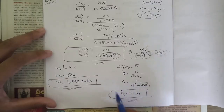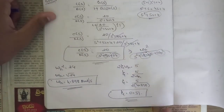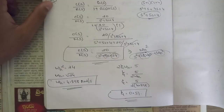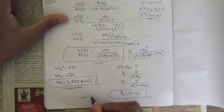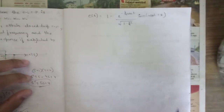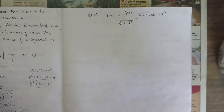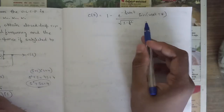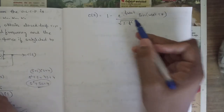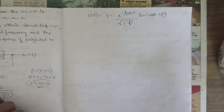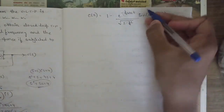Solving that gives ζ = 0.51. So we have the damping ratio ζ and natural frequency ωn. They also asked for the output response c(t), which is still pending. To find c(t) we need ωd and θ, since we don't yet have those values.